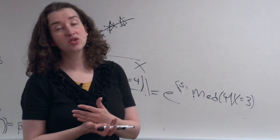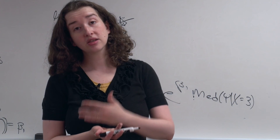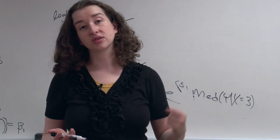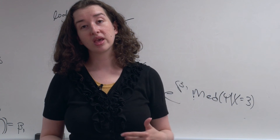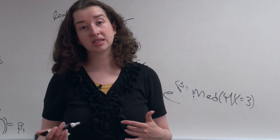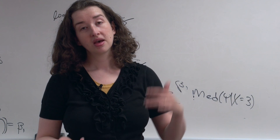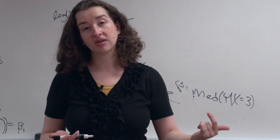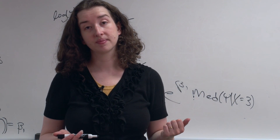When we didn't have any transformations, we could say when x goes up by 1, the mean of y given x goes up by beta 1. When we log y but not x, we can say when x goes up by 1, the median of y given x is multiplied by e to the beta 1.